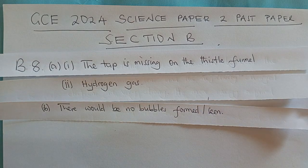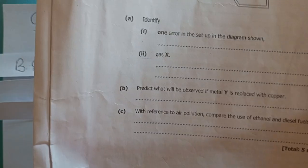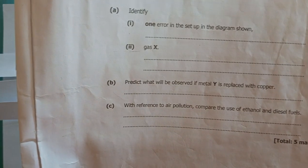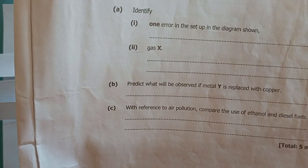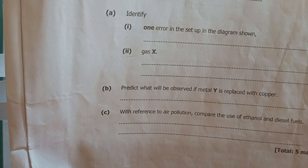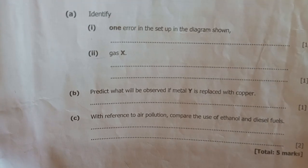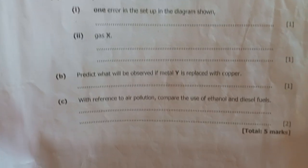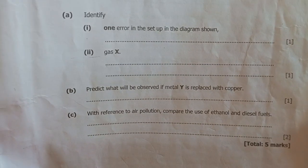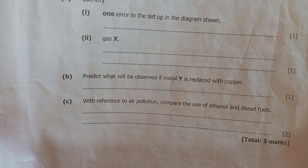Then we proceed to question C. Question C says with reference to air pollution, compare the use of ethanol and diesel fuels. Well, diesel produces a lot of carbon dioxide and carbon monoxide. And when it comes to ethanol,